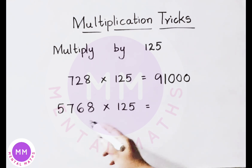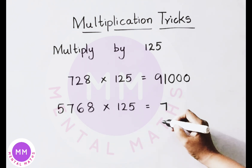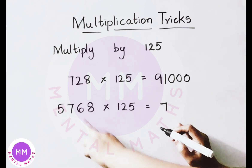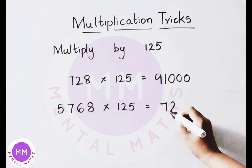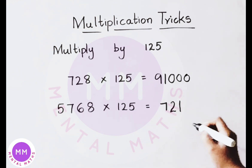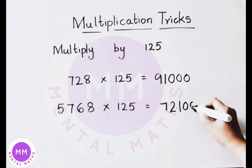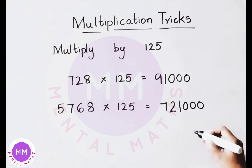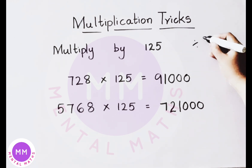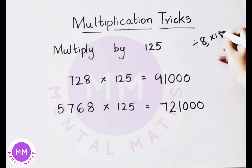See another example: 5768 multiplied by 125. Divide the given number by 8. 8 into 56 is 7 times, you get a remainder of 1, so the number becomes 16. 8 into 16 is 2 times, then 8 into 8 is 1 time. Now multiply this value by 1000 — add three zeros at the end — so the answer is 721,000. Whenever you multiply any number by 125, first divide the given number by 8, then multiply that value by 1000 to get the result.